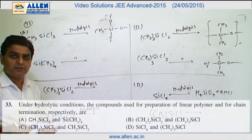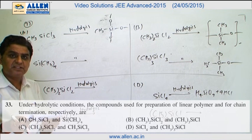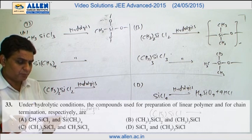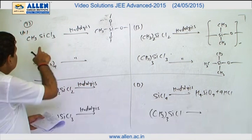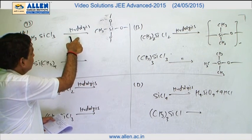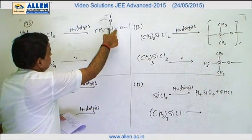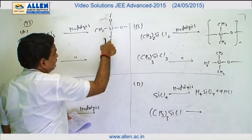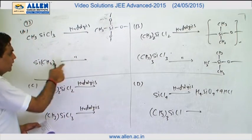Question number 33 belongs to silicons. Silicon polymers contain Si-O-Si linkage. CH3SiCl3 when hydrolyzed produces CH3SiO cross-linked polymer. It produces three linkages cross-linked polymer, but it does not undergo hydrolysis.